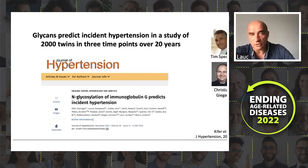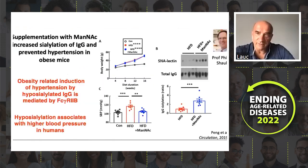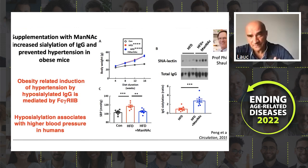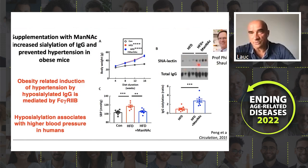When we analyzed 2,000 twins in three time points across 20 years, we showed that glycans change first and then hypertension develops later. Together with Phil Scholl from UT Southwestern, we showed in an animal model that if you correct the glycans, you can actually prevent hypertension. He fed mice a high-fat diet — the mice became obese and developed hypertension and lost sialylation of IgG, meaning their IgG became older. But if he fed the mice ManNAc (N-acetylmannosamine), the precursor of sialic acid, IgG sialylation was restored, and the mice became obese but did not develop hypertension.